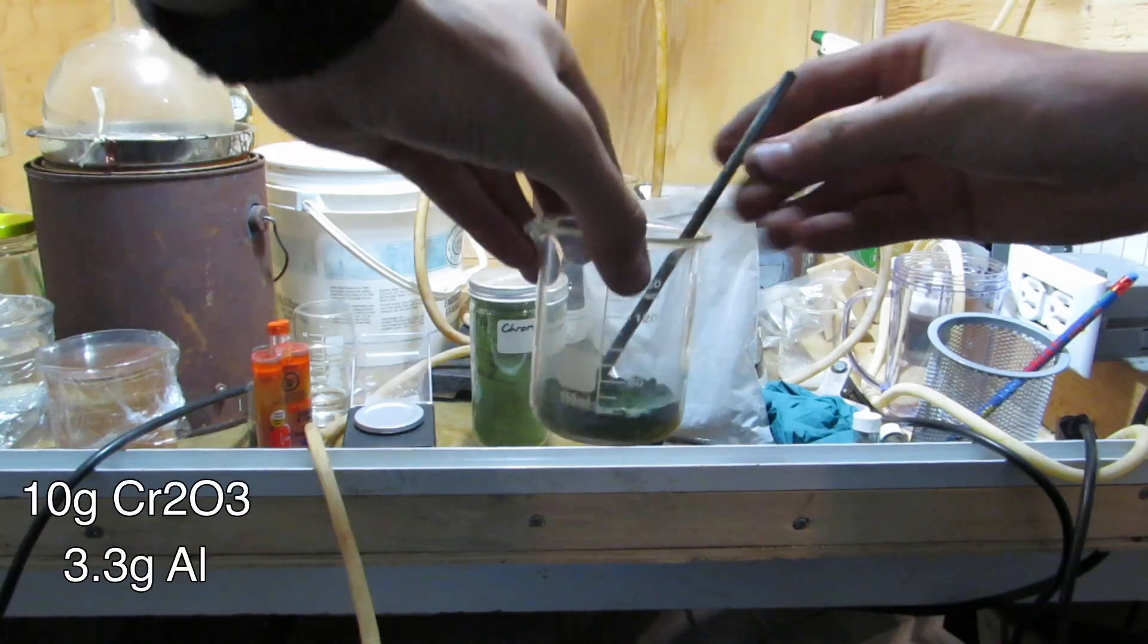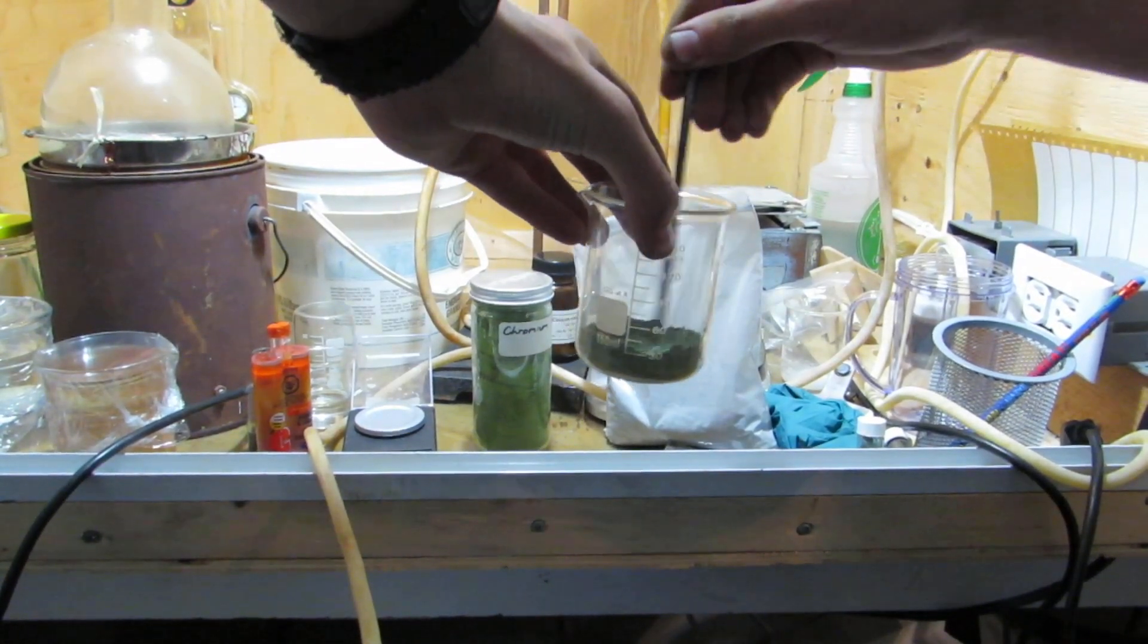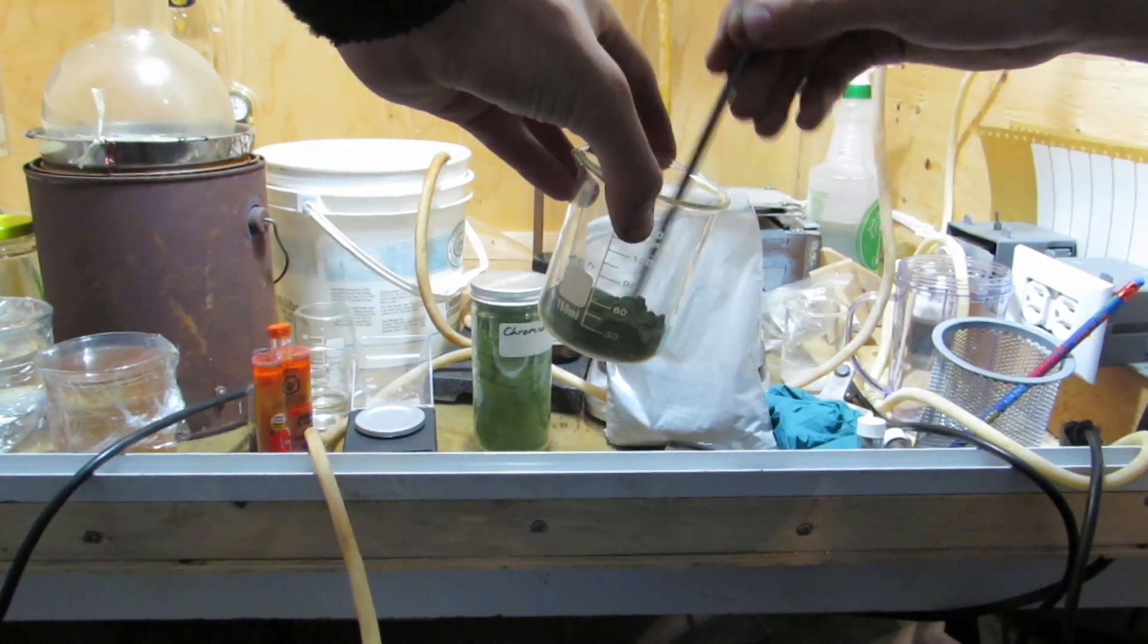10 grams of chromium oxide and 3.3 grams of aluminum powder were measured out and thoroughly mixed together. This mixture is a thermite style reaction however the self-sustaining reaction is not hot enough to appreciably melt the chromium metal on its own